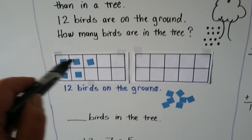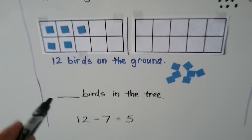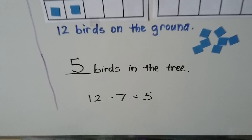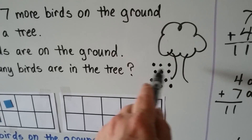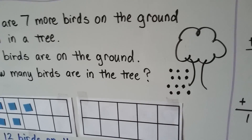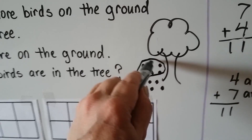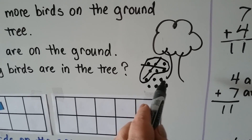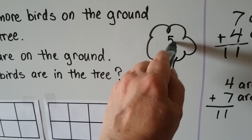We took away 1, 2, 3, 4, 5, 6, 7 counters. That left us with 5. That means there are 5 birds in the tree. 12 minus 7 is equal to 5. If these are the birds on the ground and there are 7 more on the ground than in the tree, we take away 7 and have 1, 2, 3, 4, 5 left. That means there are 5 in the tree.